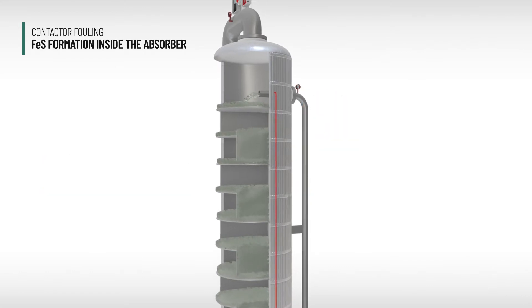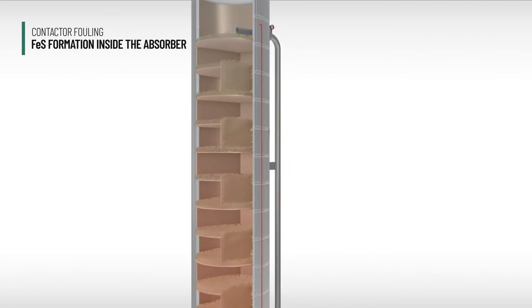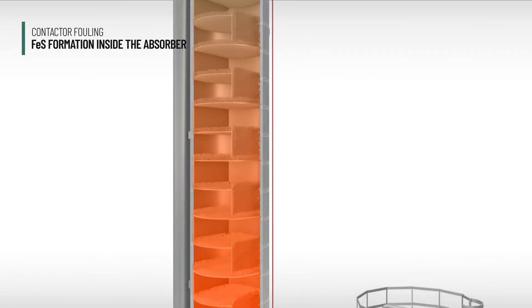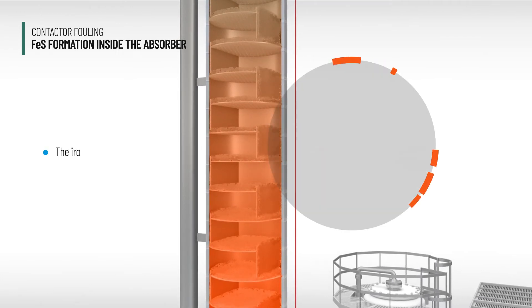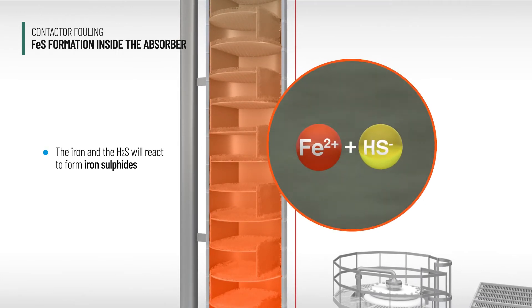It enters the tower with the lean amine and contacts H2S as it flows to the bottom of the absorber. The iron and the H2S will react to form iron sulfides.